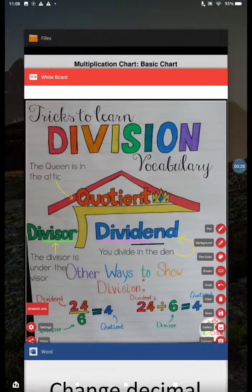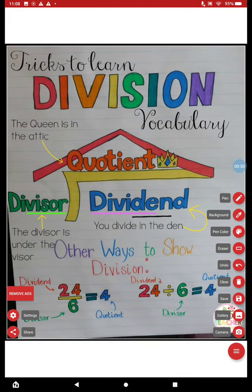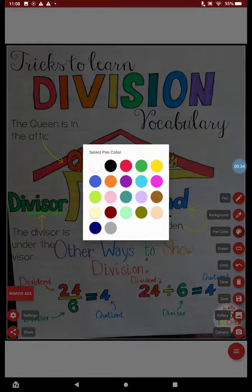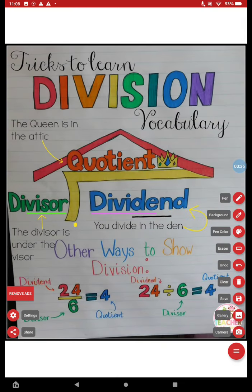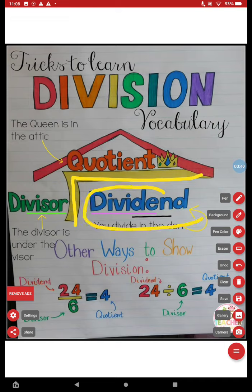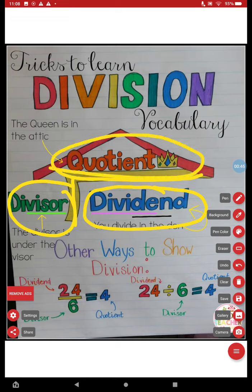Now when I'm talking about division, remember, I have to remember my division vocabulary. Here's my division bar. The dividend is in the den of the division house. The divisor is under the divisor and the quotient is the queen in the attic. Remember that helps you remember where everything is.